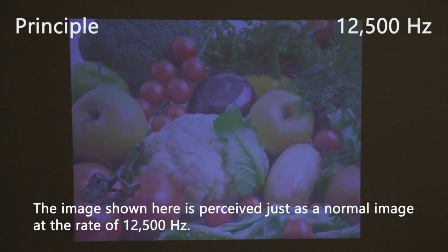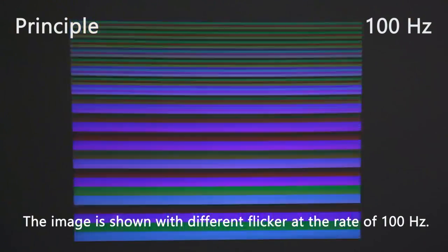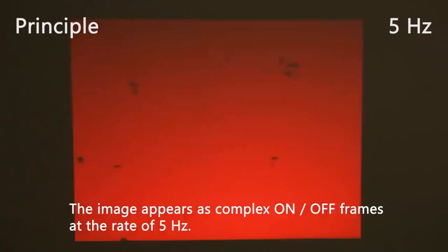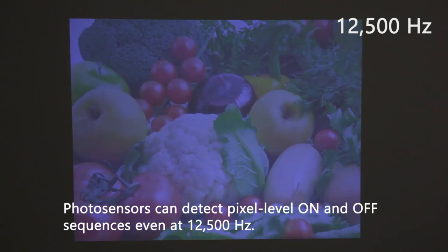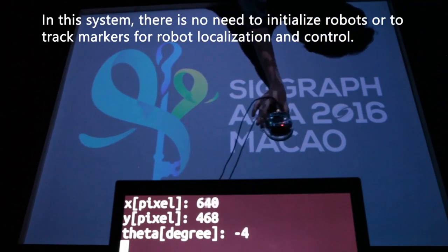The image shown here is perceived as a normal image at the rate of 12,500 Hertz. The image is shown with different flicker at 100 Hertz. The image appears as complex ON and OFF frames at the rate of 5 Hertz. Photo sensors can detect pixel-level ON and OFF sequences even at 12,500 Hertz.